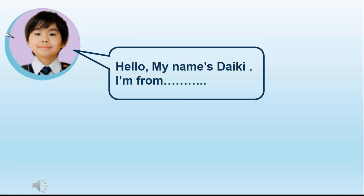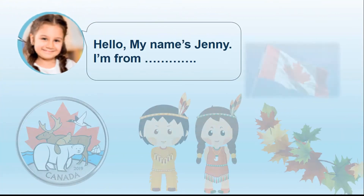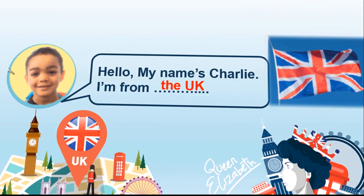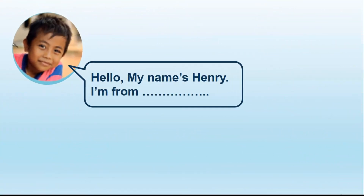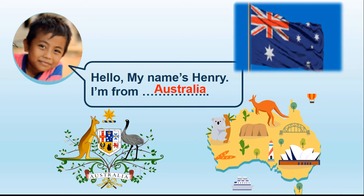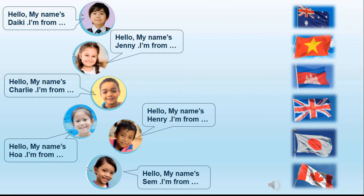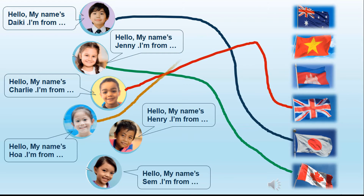There are some children from other countries. Now look at a picture. Remember: Canada, The UK, Vietnam, Australia, The UK, Australia. It's time to practice — read and say: Japan, Canada, The UK, Vietnam, Australia, Cambodia.